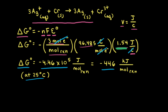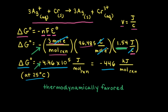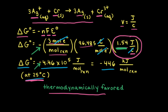Notice that a positive voltage combined with the negative sign in the equation gives a negative value for ΔG°. When ΔG° is negative, the reaction is thermodynamically favored, meaning at 25°C, silver cations will react with solid chromium to form solid silver and chromium 3+ ions. This shows that whenever the voltage is positive, we get a thermodynamically favored reaction because ΔG° will be negative.